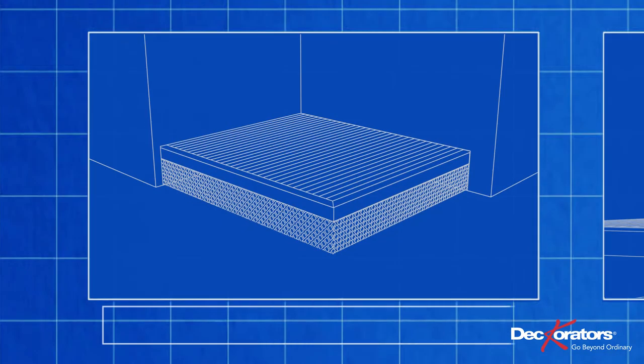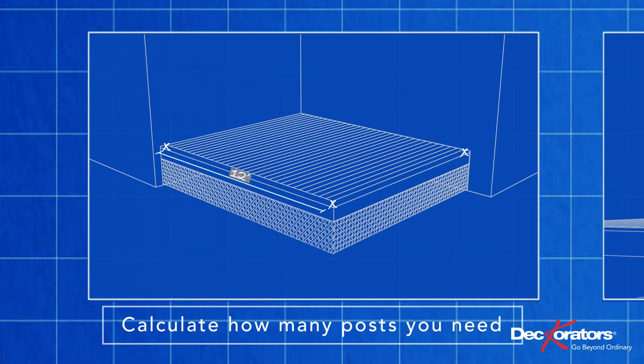Begin by calculating how many posts you need. I know I need posts here, here, and here. Luckily, this distance is 12 feet, so I can use two 6-foot railing sections. This distance is 10 feet 3 inches, so I'll have to custom fit the railing closer to the house. We'll cover that at the end. This is how my posts will be placed.